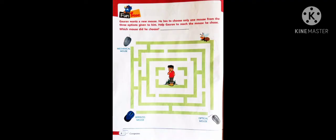Now, let's see. There is a fun zone for you all. Here is a question. Gaurav wants a new mouse. He has to choose only one mouse from the three options given to him. Help Gaurav to reach the mouse he chose. Which mouse did he choose? So, students, you have to make the way for him to reach the mouse. See, there is a blank given. After the question, you have to write the name of the mouse he chose. Okay? This is a homework for you.